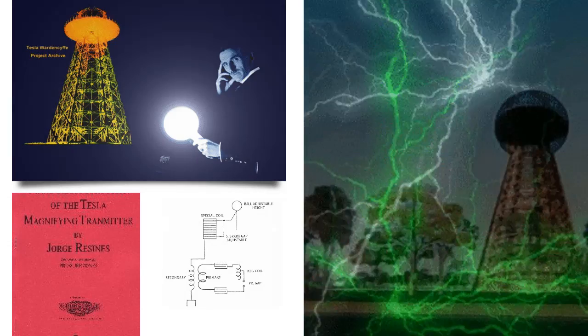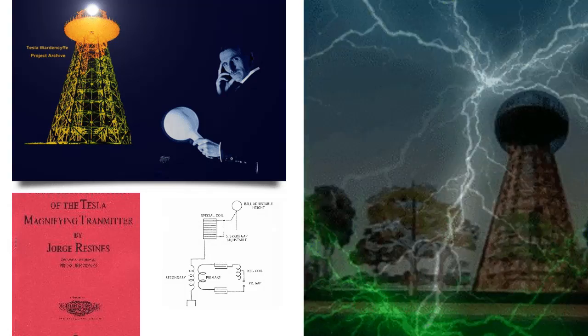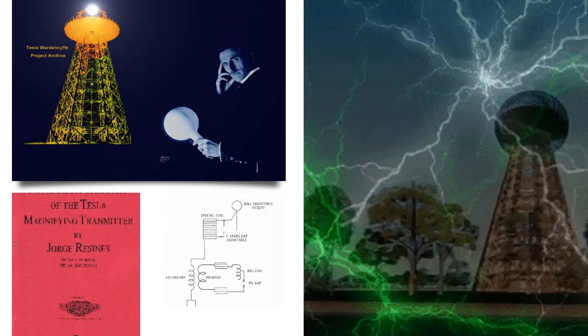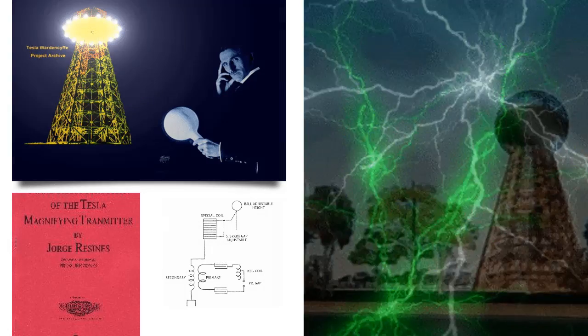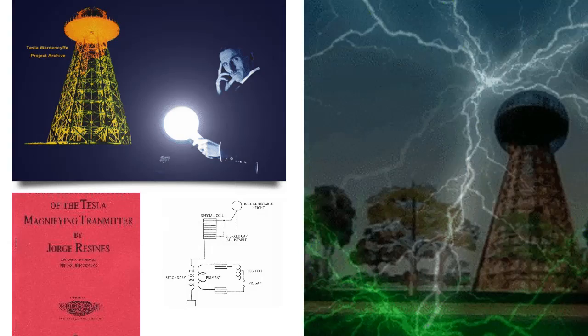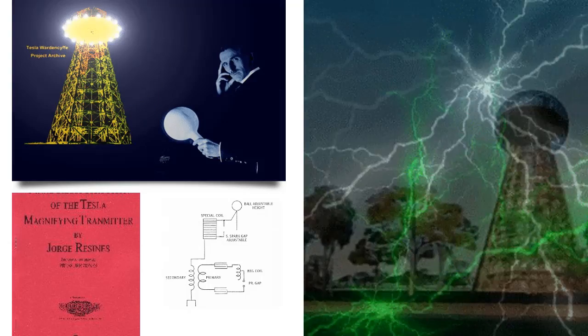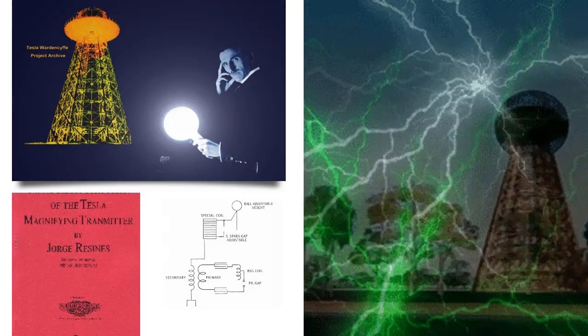The Magnifying Transmitter and Tesla Coil is an over-unity device. It is a device that sets the tension of ether from the earth with an electronic circuit, developed in the early 1900s.